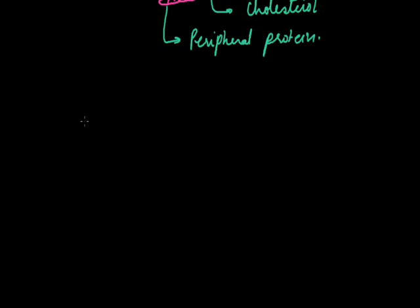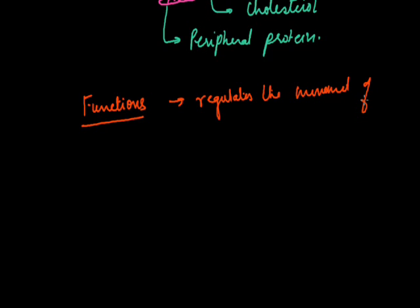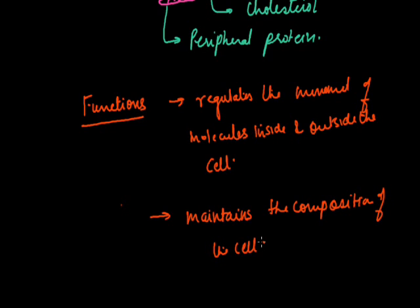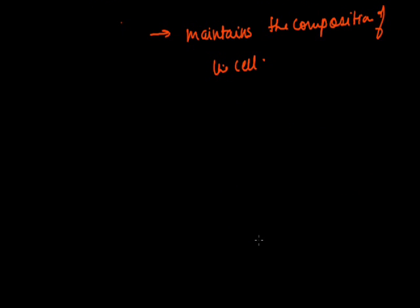Now let us look at the functions of the plasma membrane. It regulates the movement of molecules inside and outside the cell, and it helps in maintaining the composition of the cell. Let us discuss how the transportation of molecules is done across the membrane.